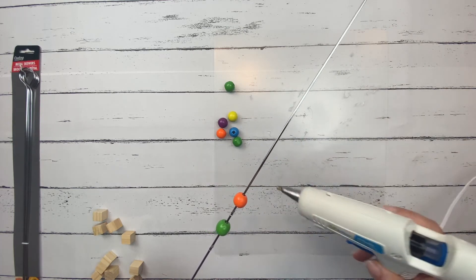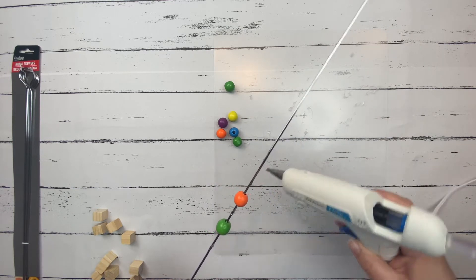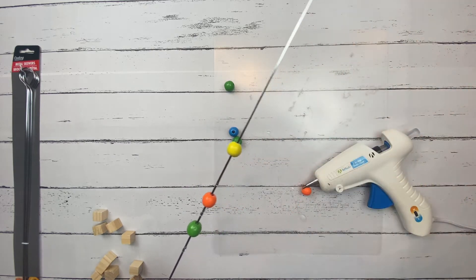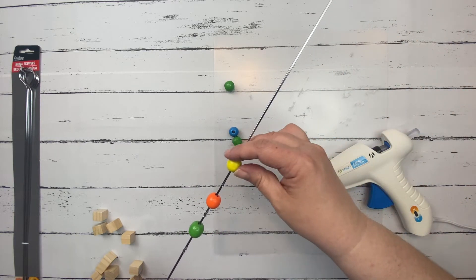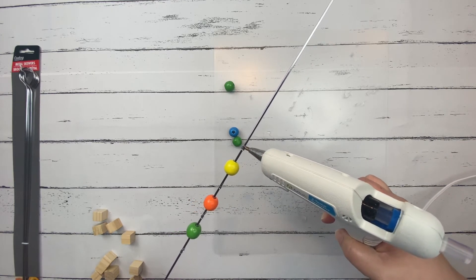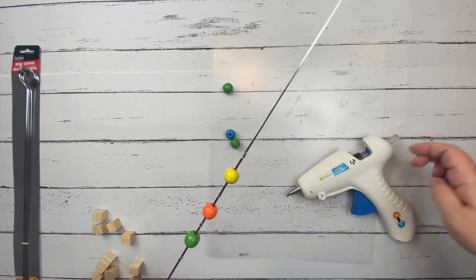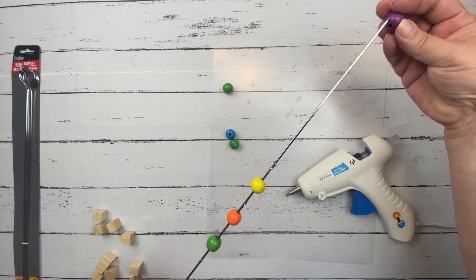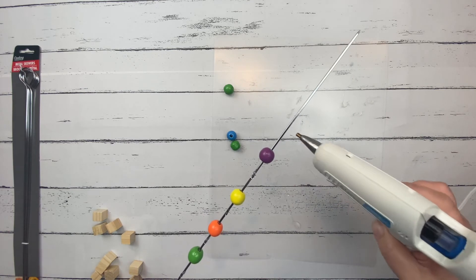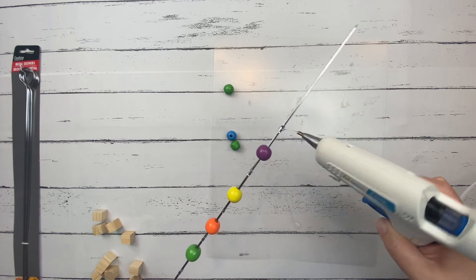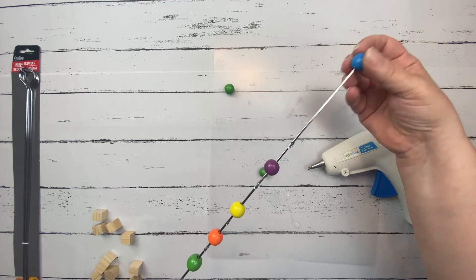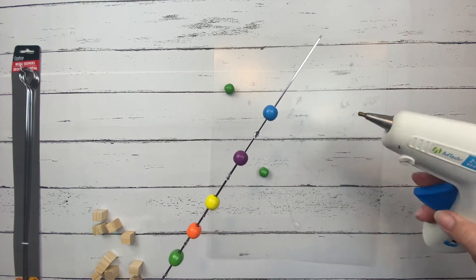Another bead, more glue, and you can let it dry in between but I go a little bit faster and just make sure that I don't get it too close to that hot glue. And then it'll dry as I'm adding more beads. And then don't forget to put a bit there at the end.